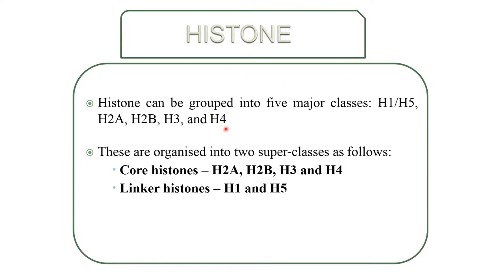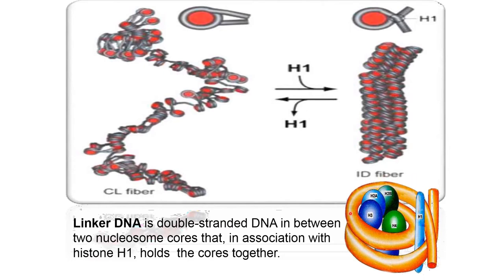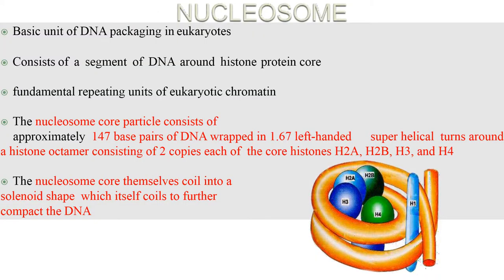Histones — H1, H2A, H2B, H3, and H4 — are organized into two superclasses. The core histones are H2A, H2B, H3, and H4, whereas the linker histones are H1 and H5. The linker DNA is a double-stranded DNA between two nucleosome cores that, in association with histone H1, holds the cores together.